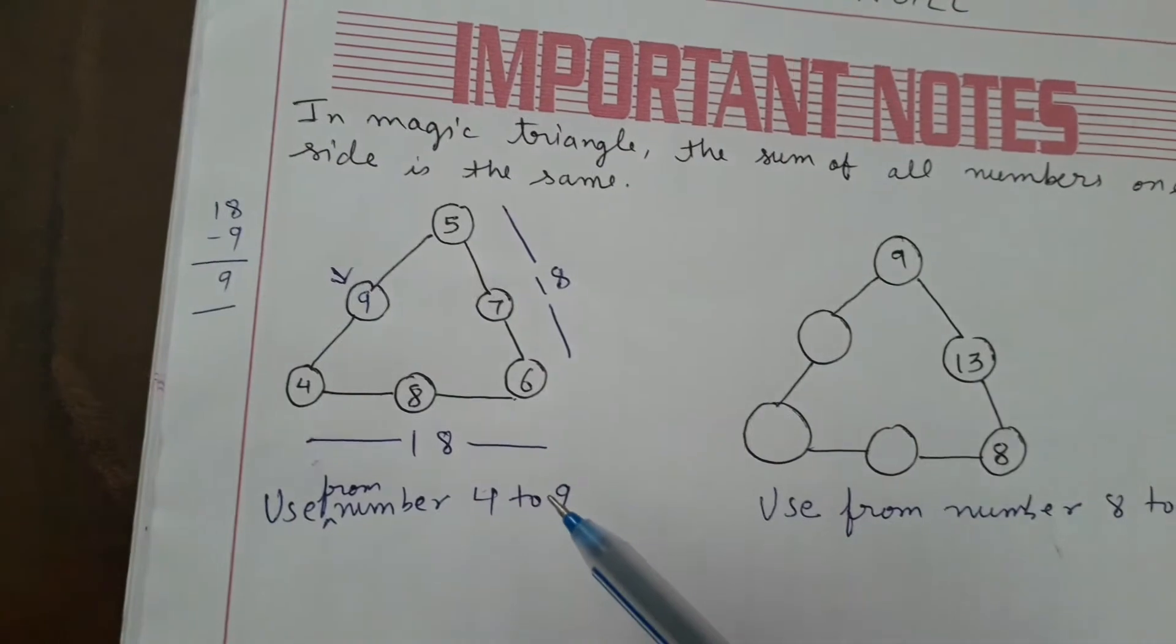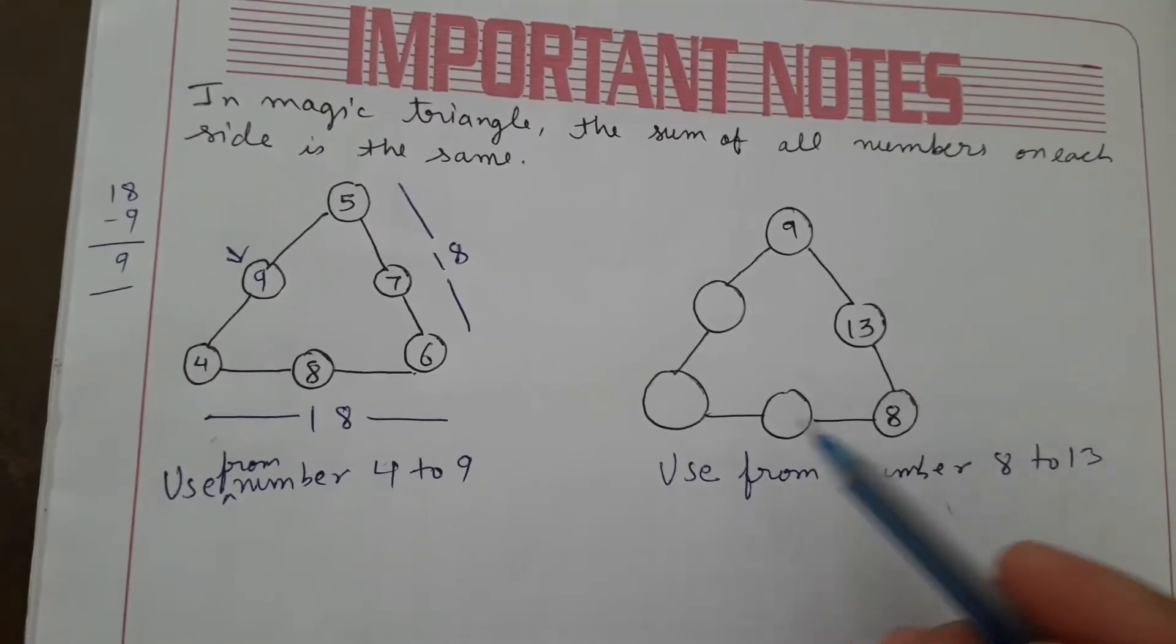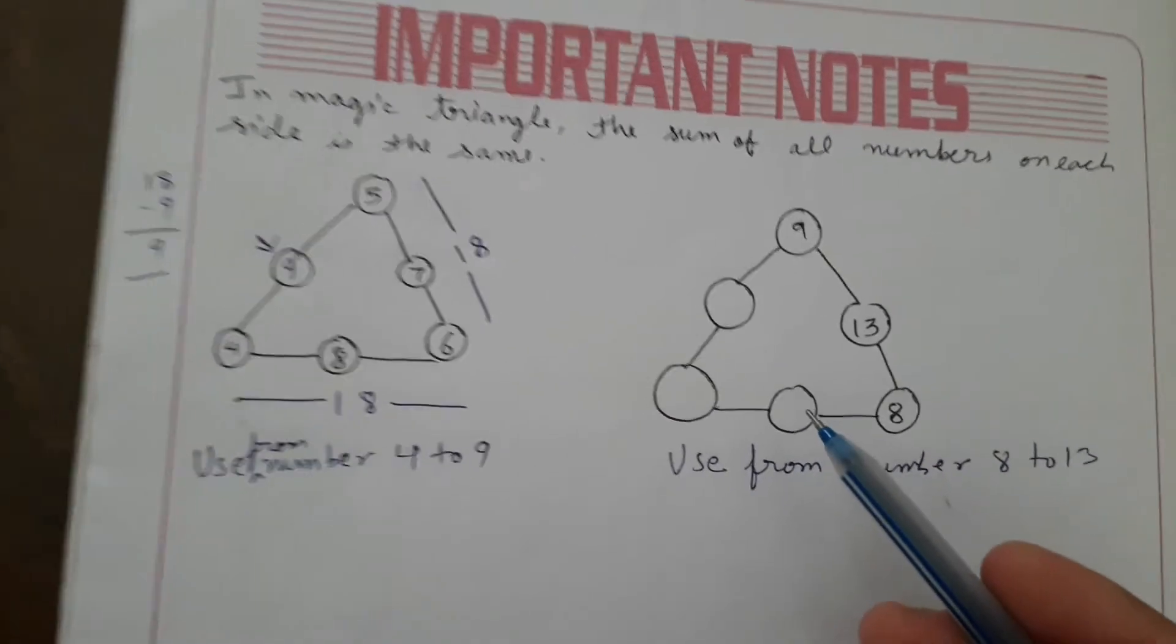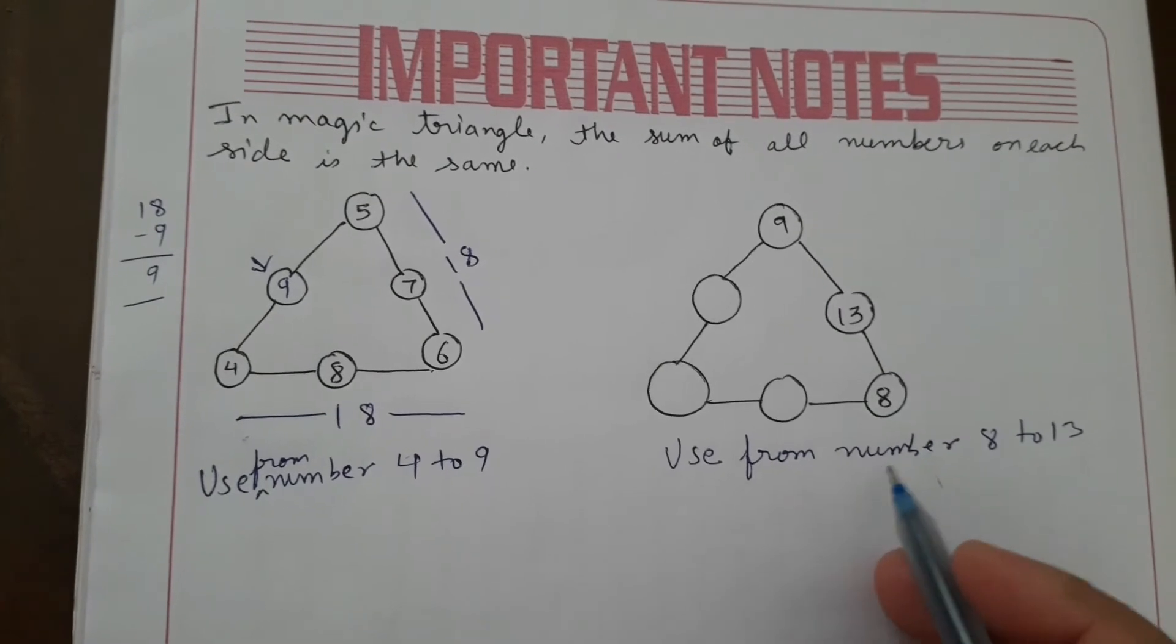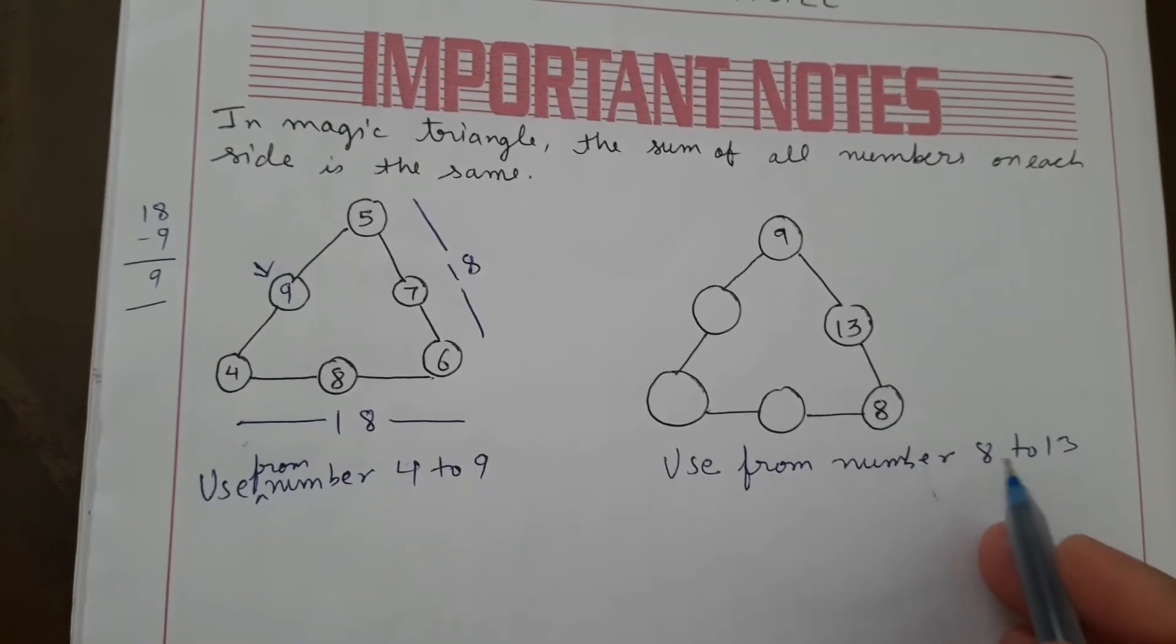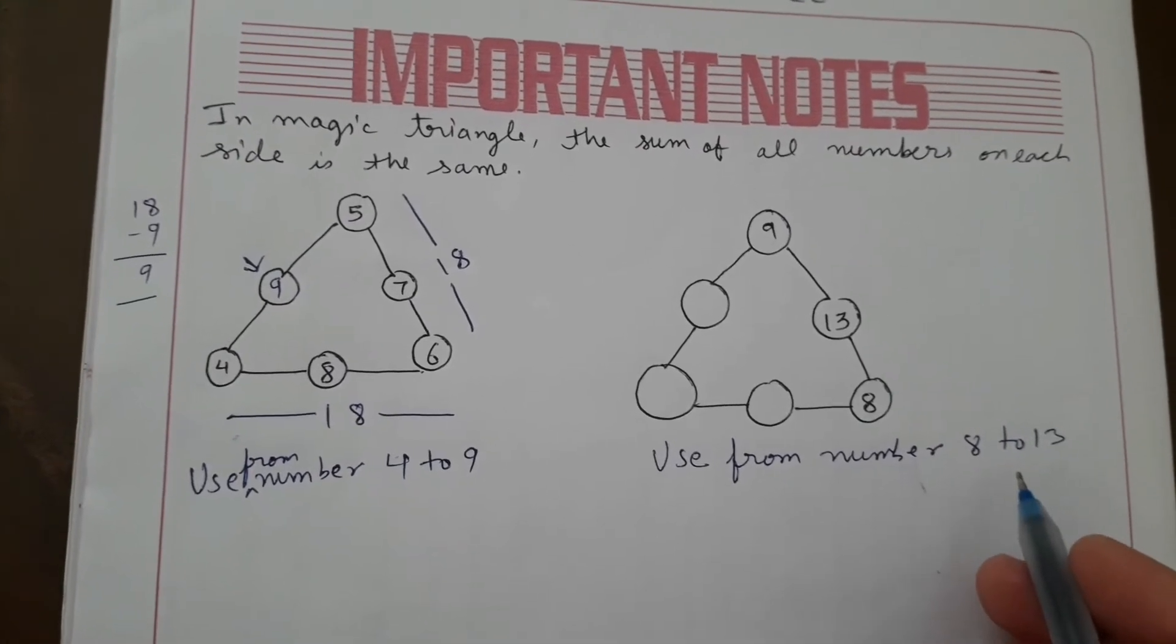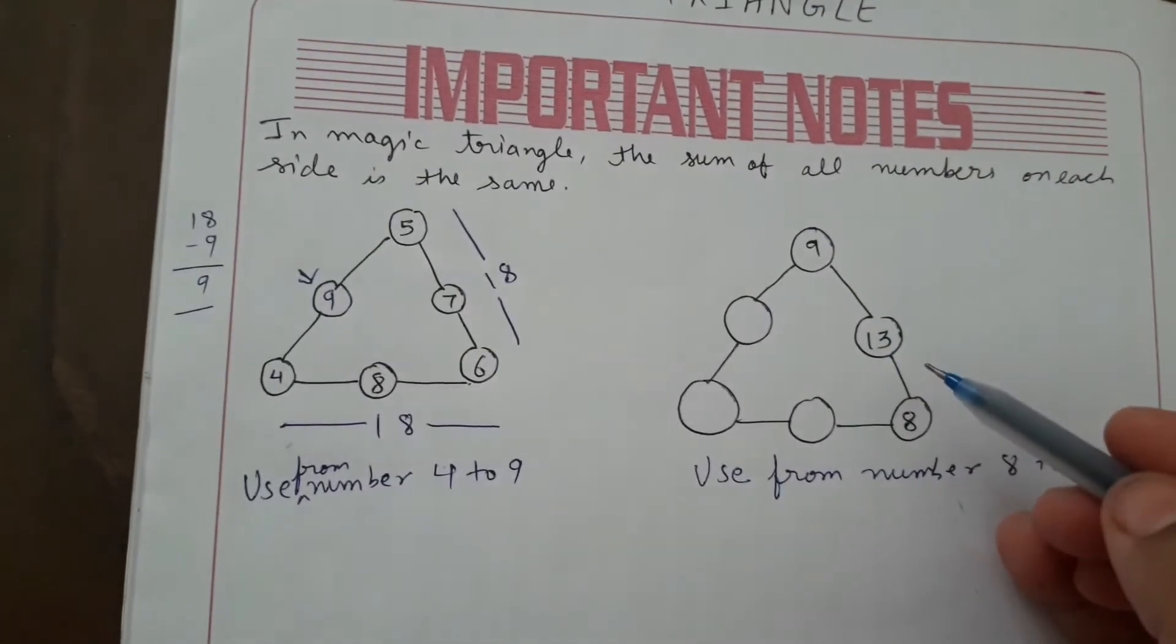Now move to the next question. You can see here missing blanks - fill in using numbers from 8 to 13. How do we solve this type of question? First you can see here one side is complete.